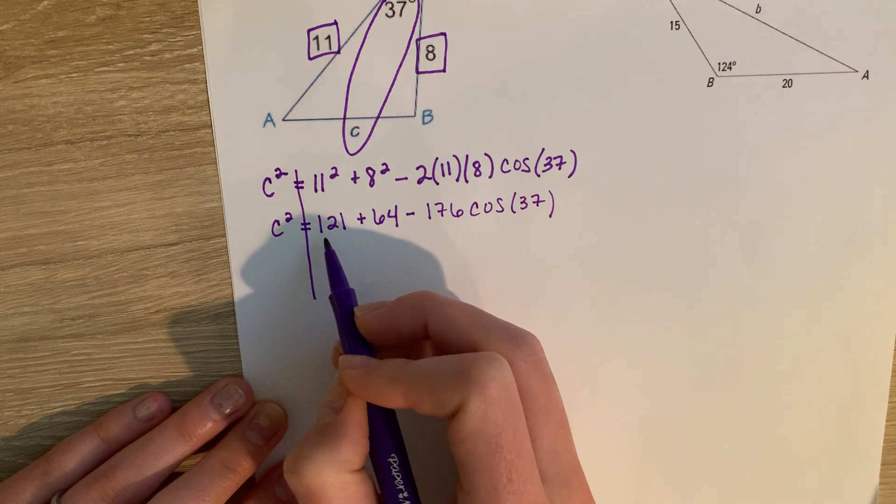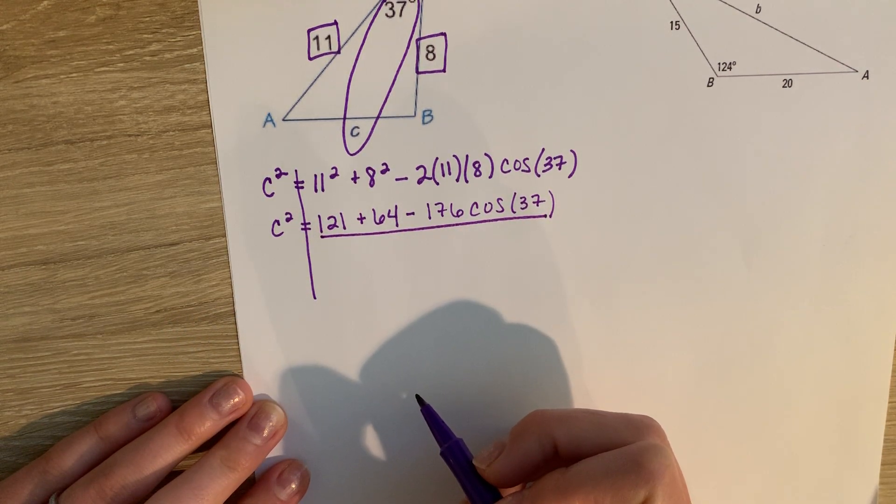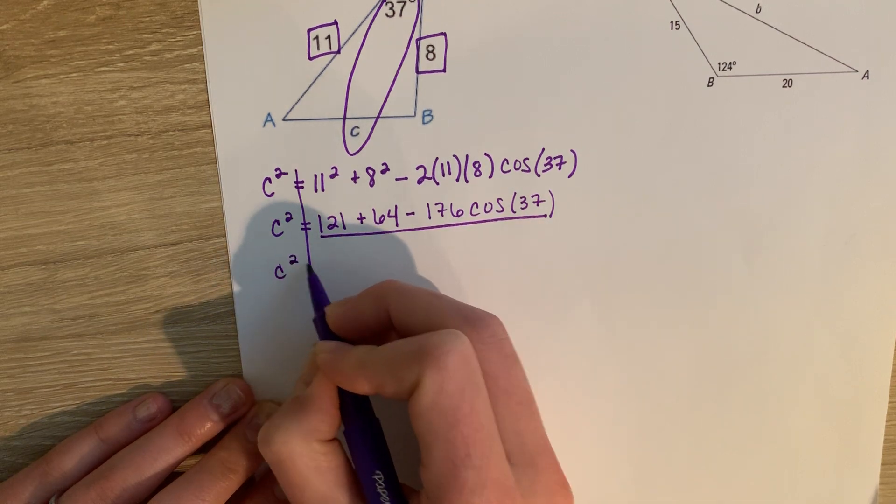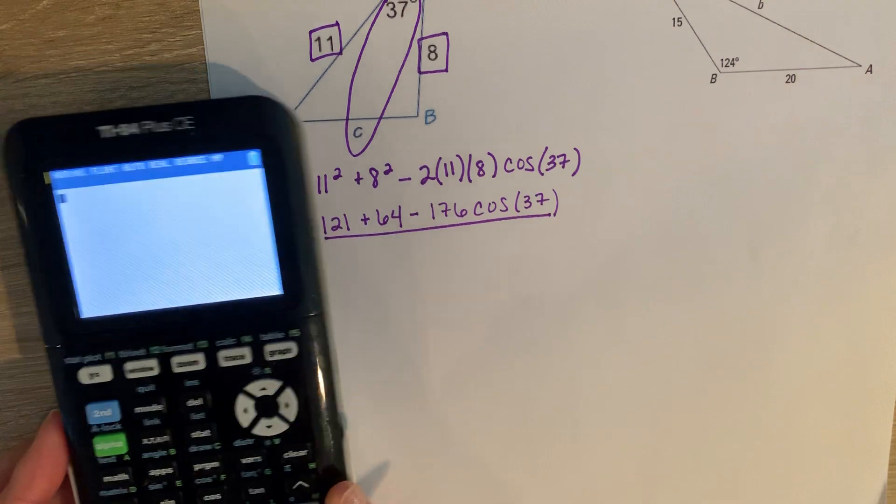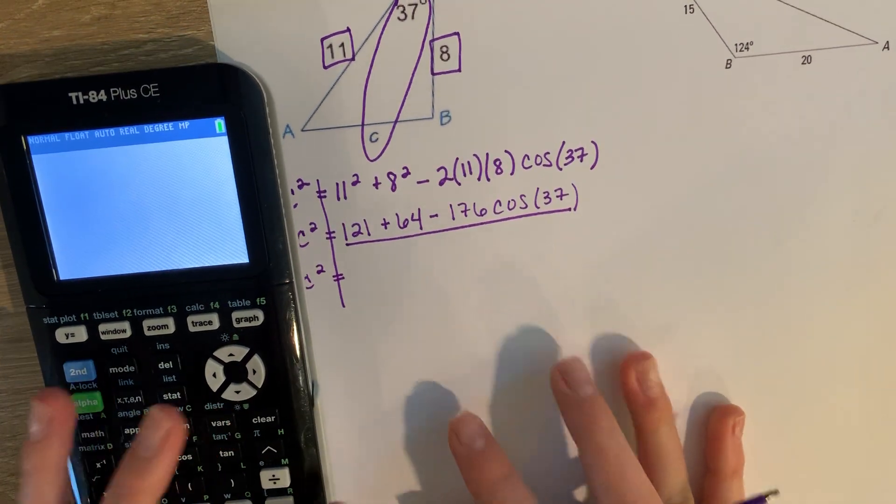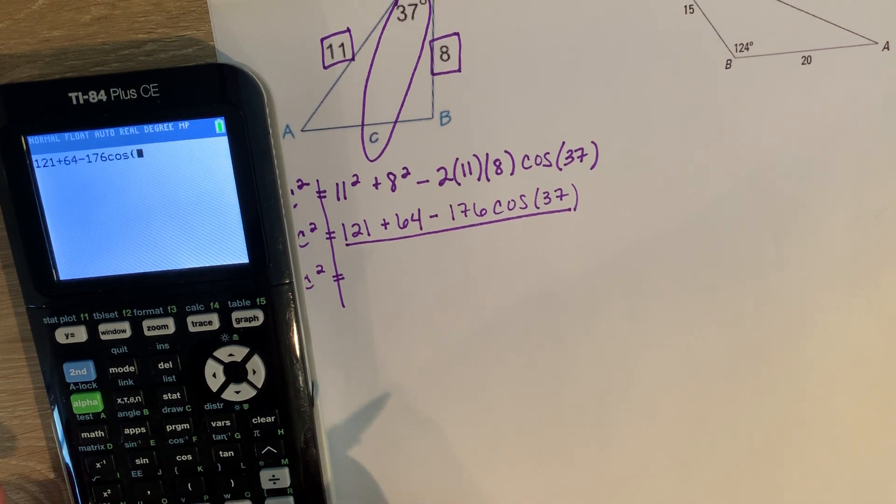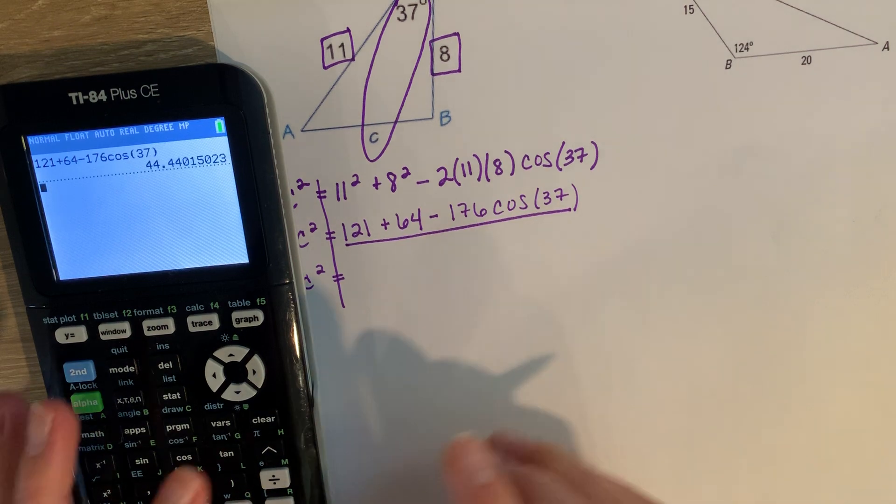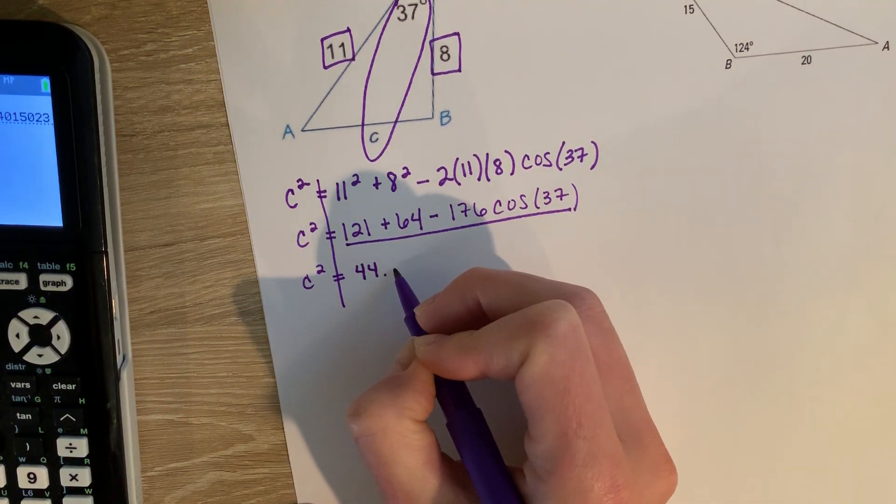And actually, I would then plug this whole thing into your calculator. So we get c squared, and then I plug in 121 plus 64 minus 176 times cosine of 37. So I get about 44.44.